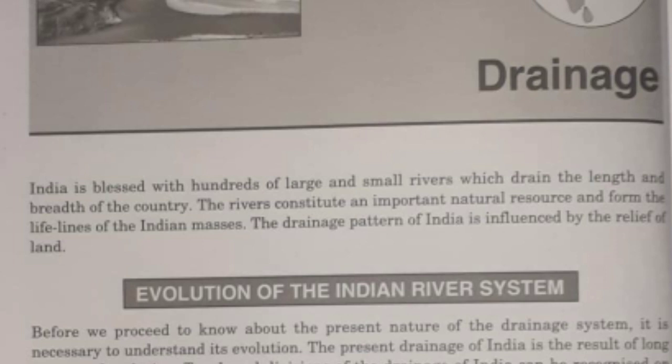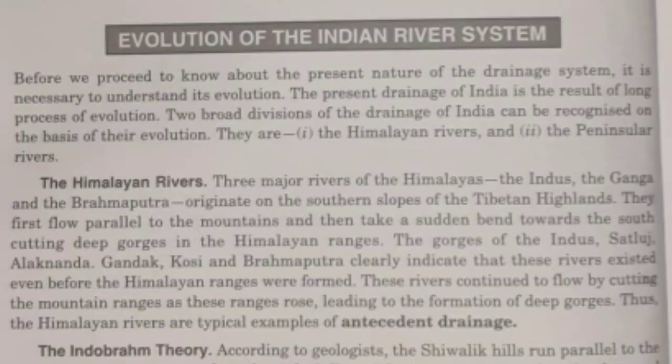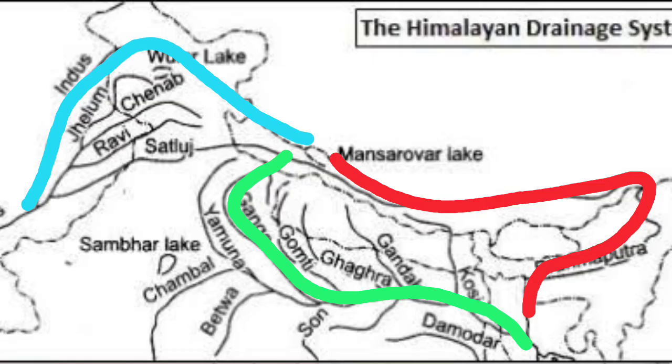The Indian river system has evolved from a long geological past. Before we move on to the present river system, we should know how it has evolved. Basically, the Indian river system has been divided into two: the Himalayan rivers and the Peninsular rivers.